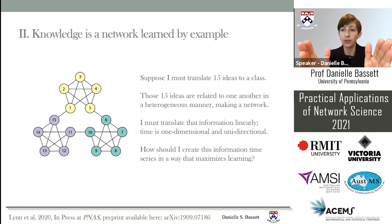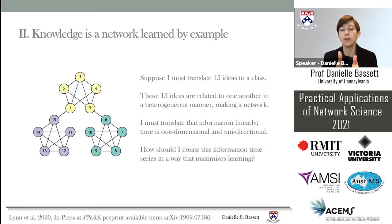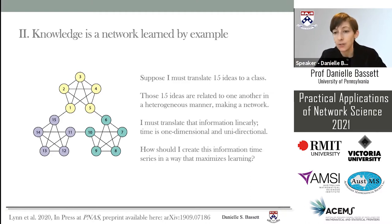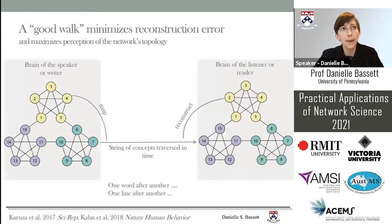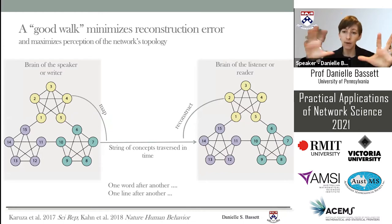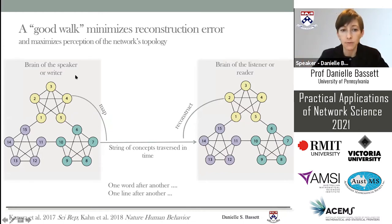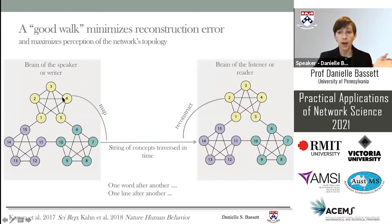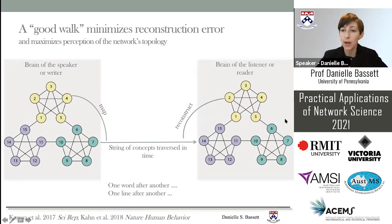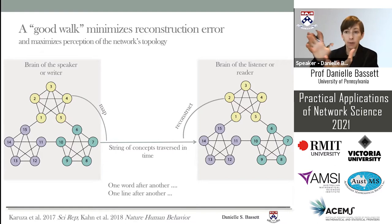Why must we present ideas linearly? Because time is one-dimensional and unidirectional. I need to take this potentially high-dimensional object and map it into the one dimension of time in a way that maximizes students' learning. On the left-hand side is the brain of the speaker or writer, with a particular network architecture of what they want to communicate. They must optimally map that architecture into the one dimension of time so that the brain of the listener can reconstruct the high-dimensional network object.